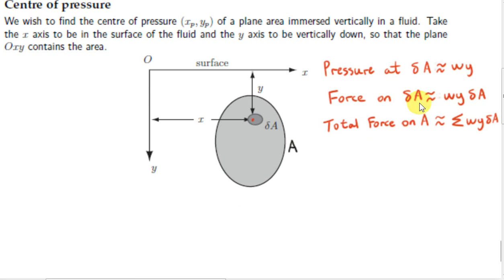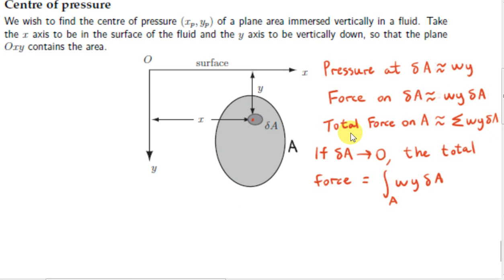This is just an approximate relationship because delta A hasn't been made vanishingly small. But in the limit, as delta A goes towards zero, this relationship becomes exact. To get the total force on A, we have to sum up forces on delta A — we divide area A up into pieces of area delta A. The force on each piece is W times y times delta A. To get the precise total force, we let delta A tend towards zero, so our sigma becomes an integral sign integrating over the entire area, and delta A becomes dA.